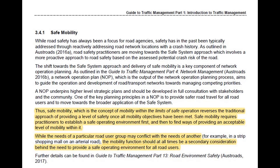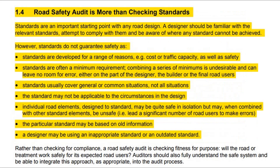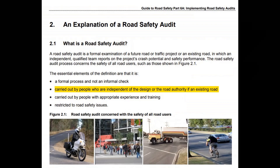The guide goes on to say that the needs of a particular road user group may conflict with the needs of another. The mobility function should at all times be a secondary consideration behind the need to provide a safe operating environment for all road users, and that's important to keep in mind when reading the audit. This page from the guide makes some useful points worth pausing to read. The audit is carried out by people who are completely independent — typical of any audit, whether commissioned by Council or Transport for NSW.